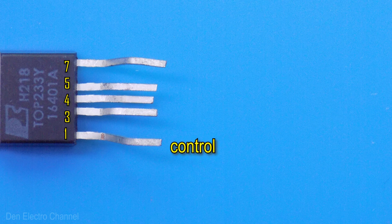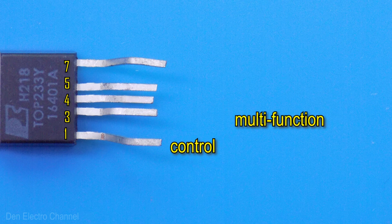The first pin is control - voltage is supplied here from the control winding. The third is multi-function. It can be used to organize a number of functions that are used in these power supplies, but I will talk about them in the next video. Now this pin serves to protect against high and low mains voltage. The fourth pin, source, is the source of the field effect transistor installed in the microcircuit. The minus is also connected here.